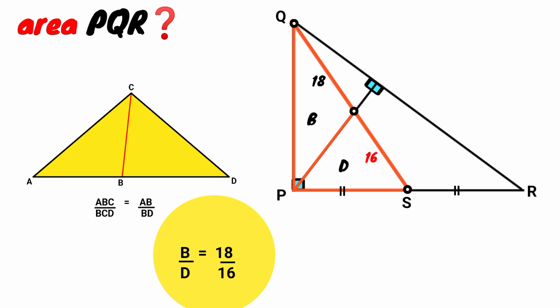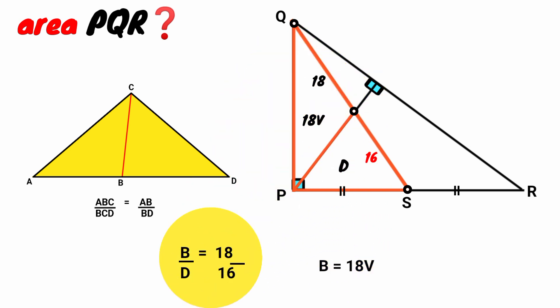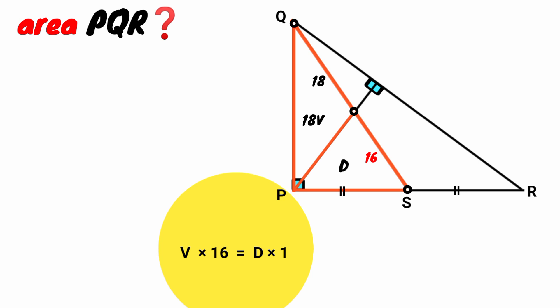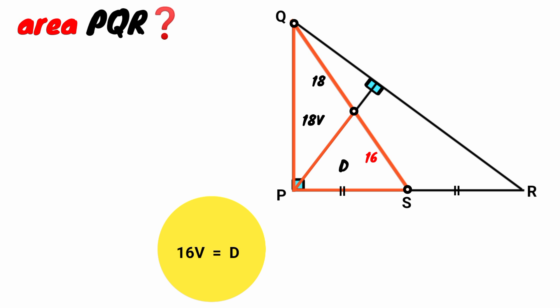Let's do something. Let B equal 18V and substitute it here. So 18V over T equals 18 over 16. This 18 cancels this 18, so V over T equals 1 over 16. Cross multiply: V times 16 is 16V and T times 1 is T. So 16V equals T — that is, T equals 16V. So this triangle's area is 16V.